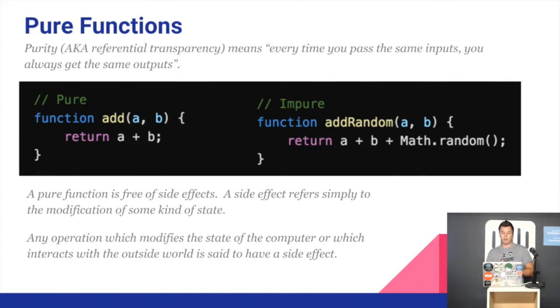A pure function is basically a function that when you call it with some arguments, like for example here we are adding two numbers. If you pass five and five, it doesn't matter how many times you call that function with five and five, you will always get the same result 10. So in that case, the function is pure.